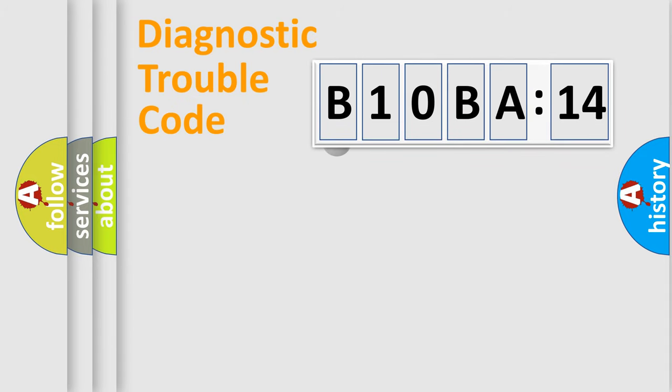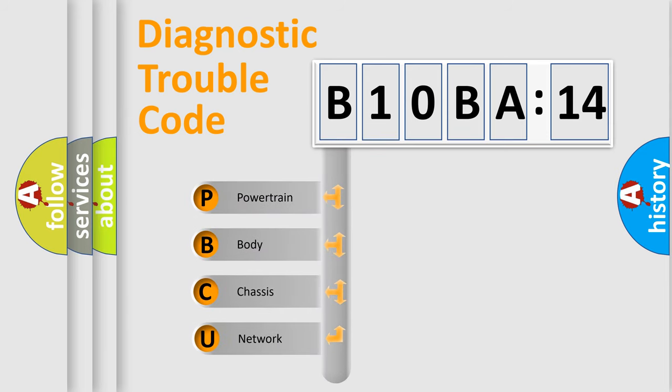First, let's look at the history of diagnostic fault code composition according to the OBD2 protocol, which is unified for all automakers since 2000. We divide the electric system of automobile into four basic units.